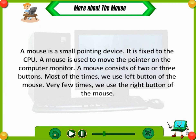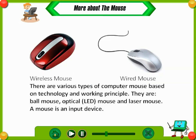Most of the time we use the left button of the mouse. Very few times we use the right button of the mouse. There are various types of computer mouse based on technology and working principle. They are ball mouse, optical LED mouse, and laser mouse.